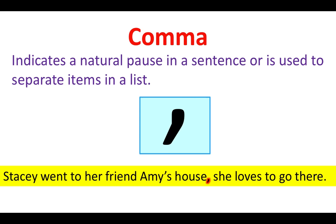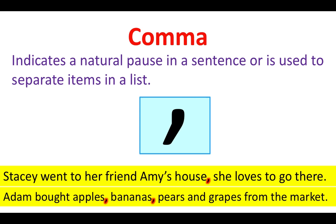Comma. A comma indicates a natural pause in a sentence, or is used to separate items in a list. For example: Stacy went to her friend Amy's house; she loves to go there. This sentence shows us where a comma can be used to create a natural pause in a sentence.